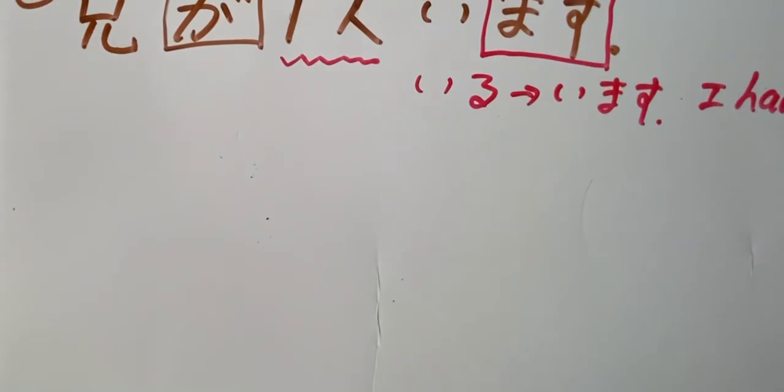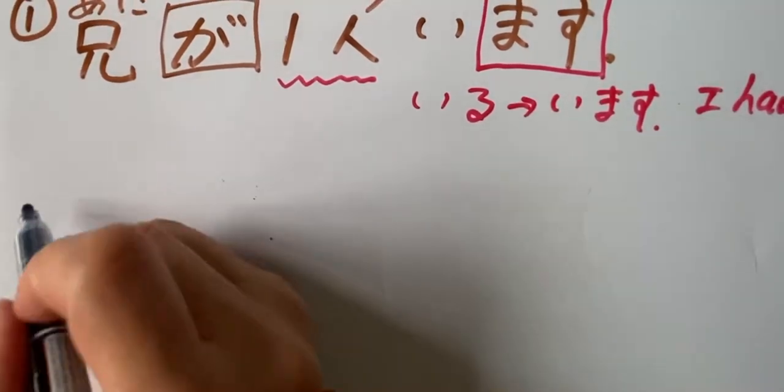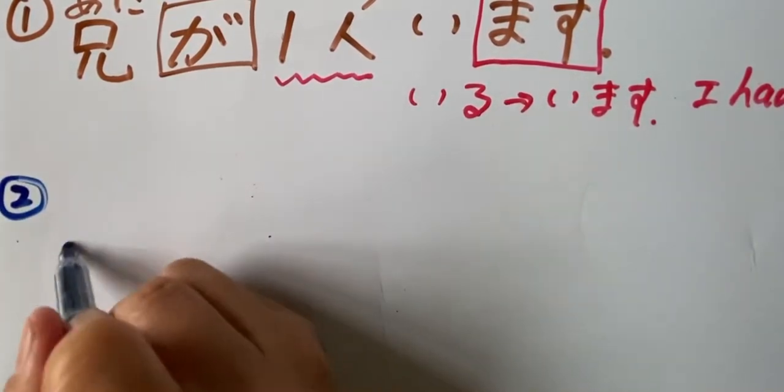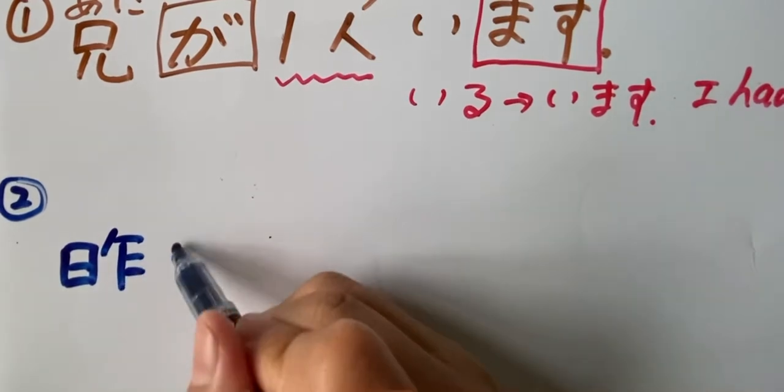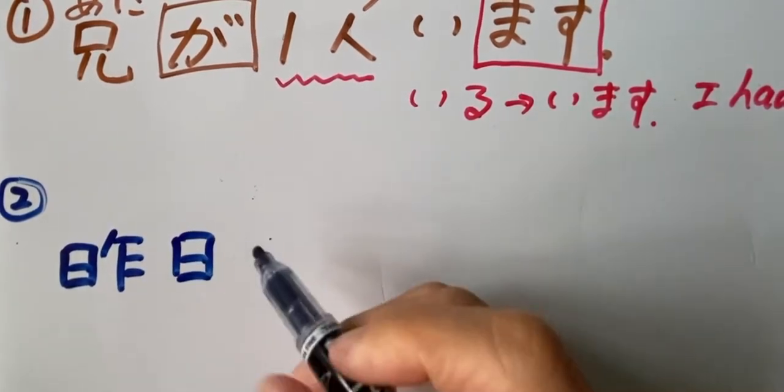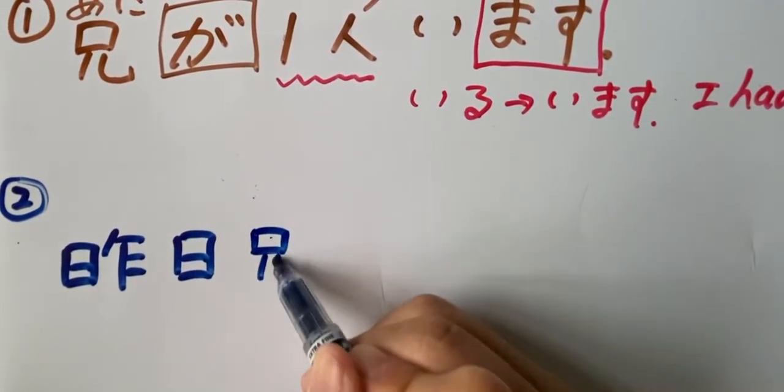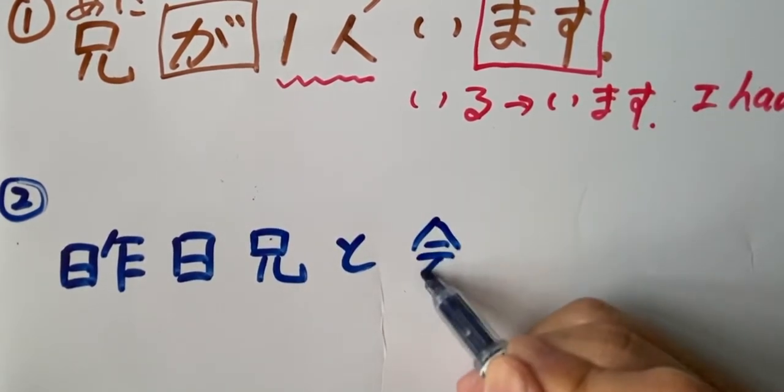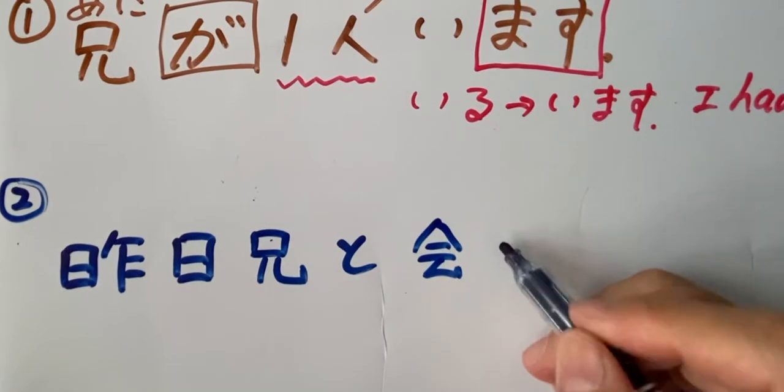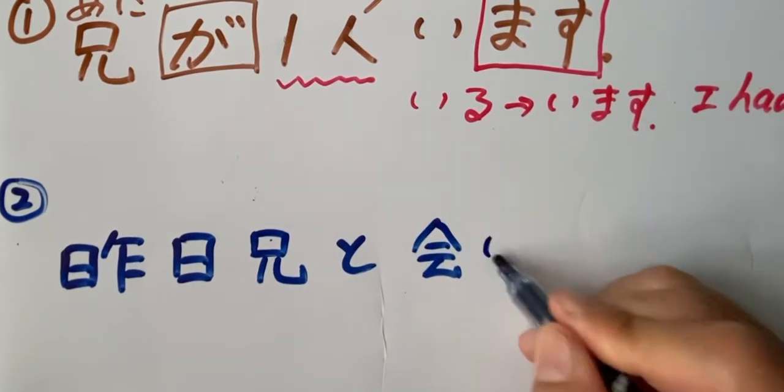Au. So let's see, kino. What is kino? Have you learned kino? This is the kanji for kino. Kino. Ani to. Remember the past form we learned just now, aimashita.